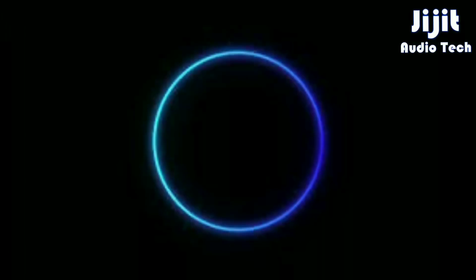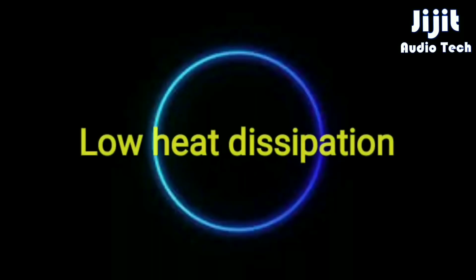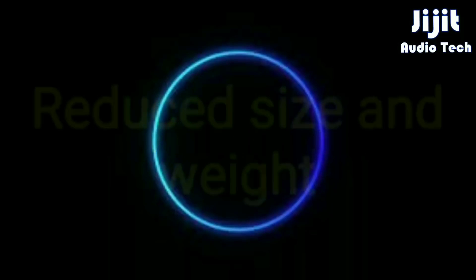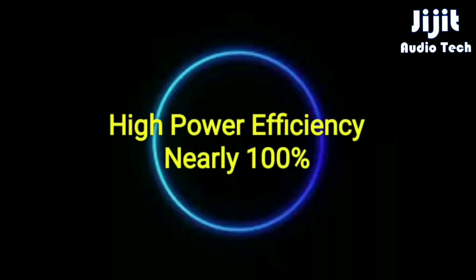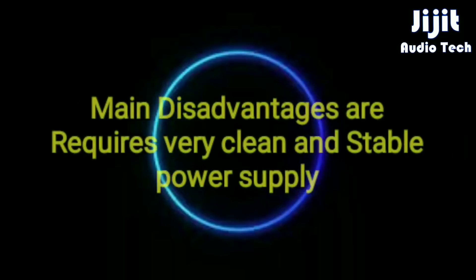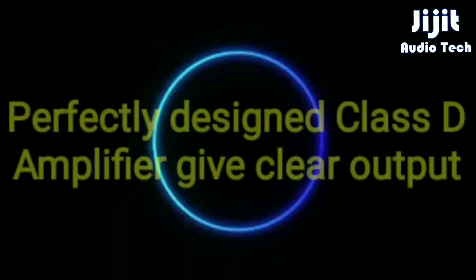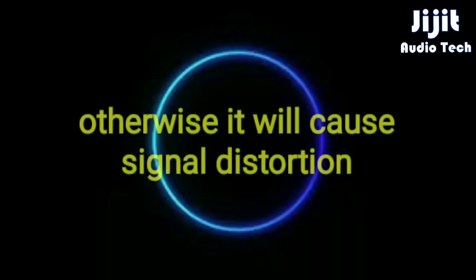The Class D amplifier is known for its high efficiency. The input PWM or Pulse Width Modulation signal can be transferred with close to 100% efficiency. A well-designed Class D amplifier produces excellent sound clarity and is much more popular today due to its efficiency advantages.